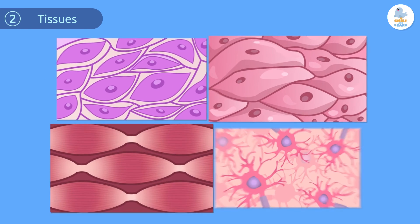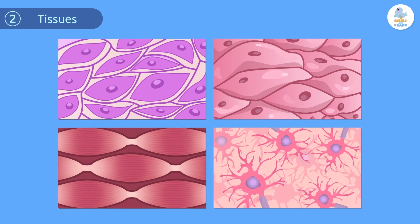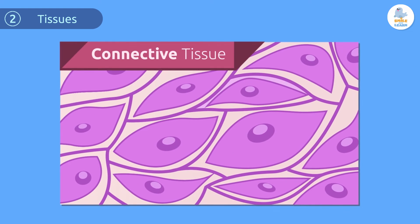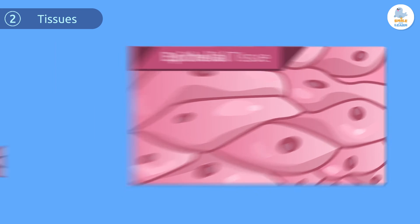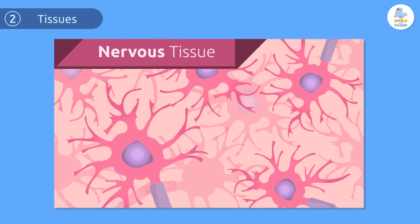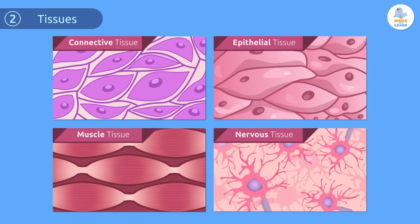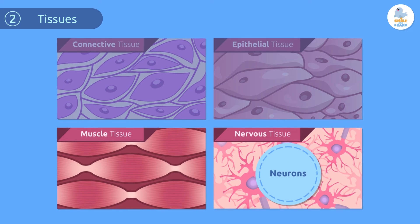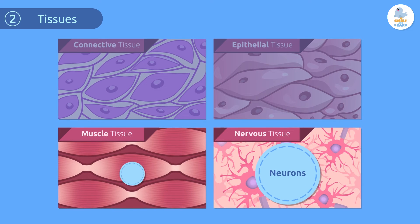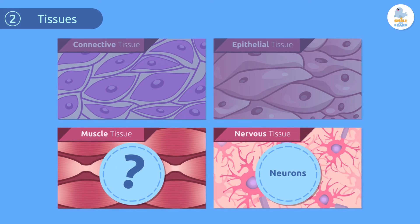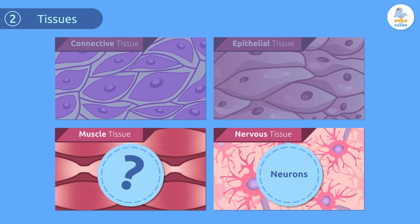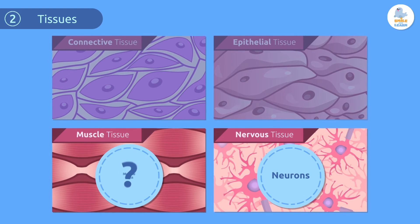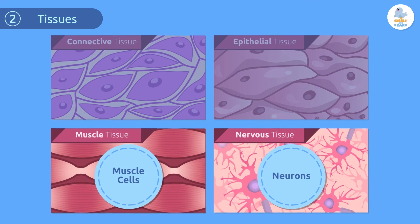Tissues are made up of the same types of cells that carry out the same function. There are four tissue types in our body: connective tissue, epithelial tissue, muscle tissue, and nervous tissue. The nerve tissue cells are called neurons, and muscle tissue cells are called muscle cells.